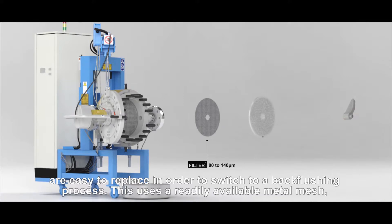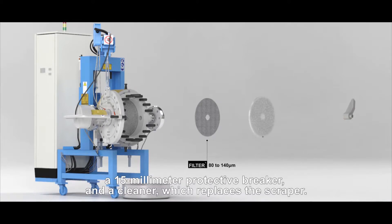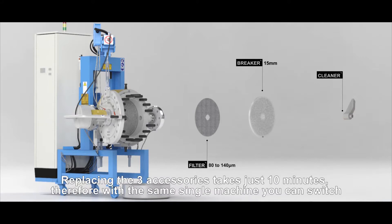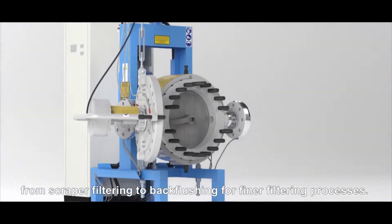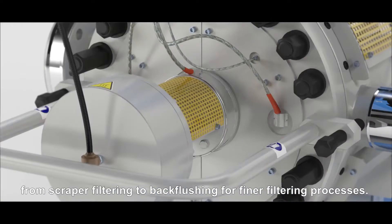This uses a readily available metal mesh, a 15mm protective breaker, and a cleaner which replaces the scraper. Replacing the three accessories takes just 10 minutes. Therefore, with the same single machine, you can switch from scraper filtering to back-flushing for finer filtering processes.